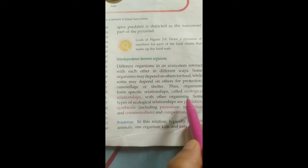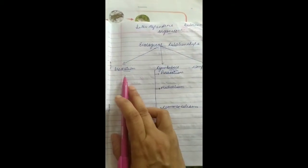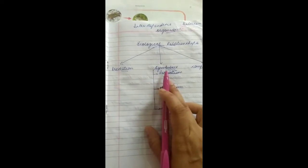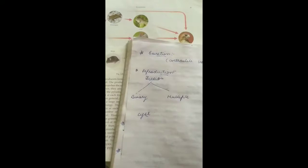Now we will discuss the different types of ecological relationships. Basically we have three types of ecological relationships: one is known as predation, second one is symbiosis, and third one is competition. We will discuss them one by one.